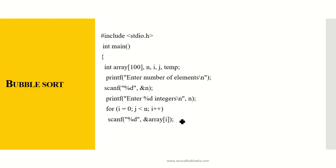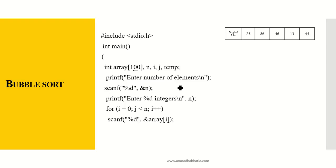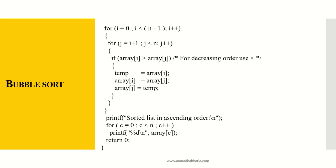Now let's look at the C program for bubble sort. We include stdio.h, define int main, declare an array that can hold 100 elements, and variables n, i, j, and temp as loop variables. We prompt the user to enter the number of elements and scan it with scanf. For five elements, a for loop scans the five integers into the array. The outer loop runs from i equals 0 to i less than n minus 1, incrementing i.